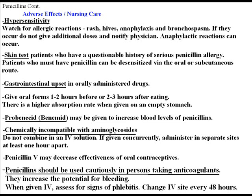GI upset is commonly seen, especially with orally administered penicillin. To best give and absorb the penicillin, give the oral form one to two hours before or two to three hours after eating, as that helps with the absorption rate. Probenecid may be given to increase blood levels of penicillin. Penicillin is chemically incompatible with aminoglycosides, so do not combine them in the IV solution. If you must give them concurrently, administer them in separate sites on the patient and at least an hour apart at dosing time.